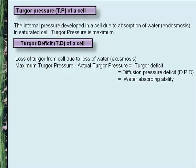Turgor pressure is the internal pressure developed in a cell due to absorption of water and osmosis. In a saturated cell, the turgor pressure is maximum. Turgor deficit (Td) of a cell is the loss of turgor from the cell wall due to loss of water. Exosmosis causes the turgor deficit of a cell. Maximum turgor pressure minus actual turgor pressure equals turgor deficit, which equals the diffusion pressure deficit (DPD), which is also equal to the water-absorbing ability.